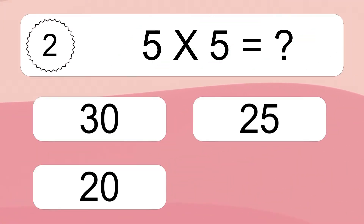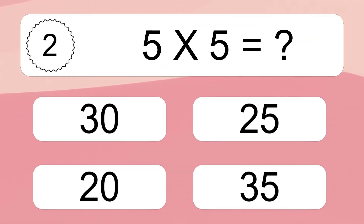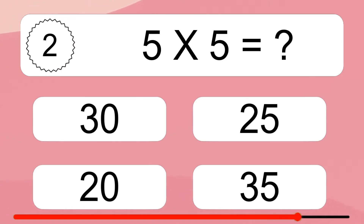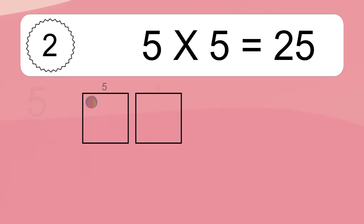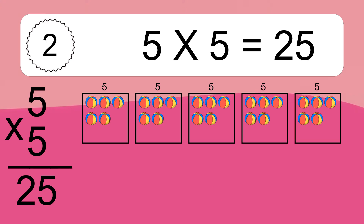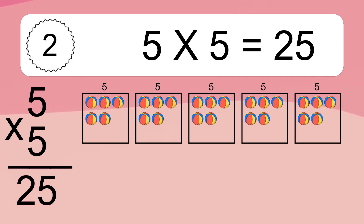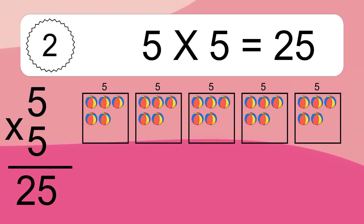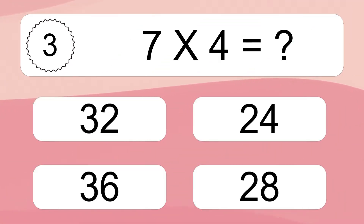5 times 5 equals what? 5 times 5 equals 25. We have 5 boxes, and each box has 5 colorful balls inside. If you count all the balls in all the boxes together, you will have 5 times 5 balls. This equals 25 balls.